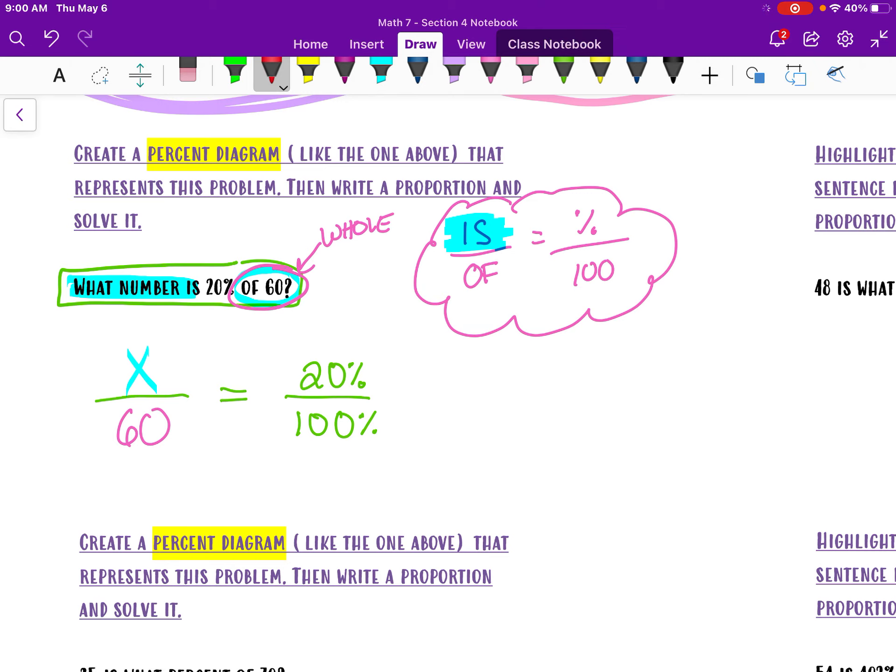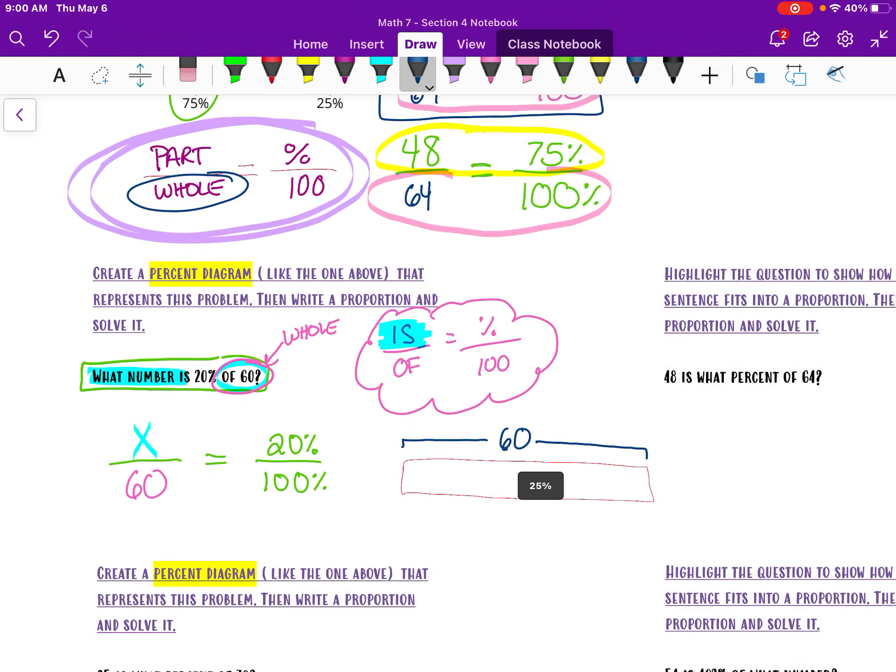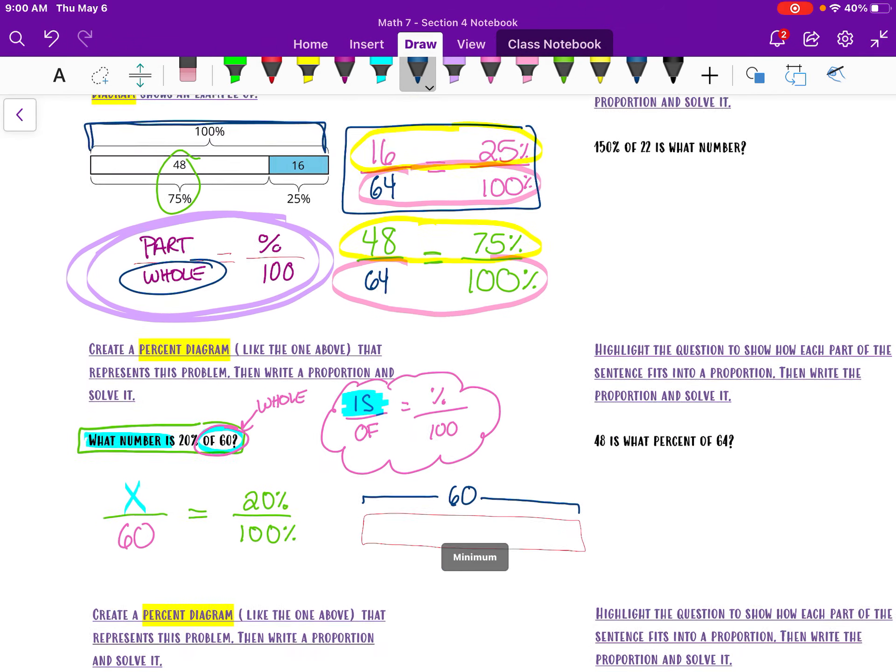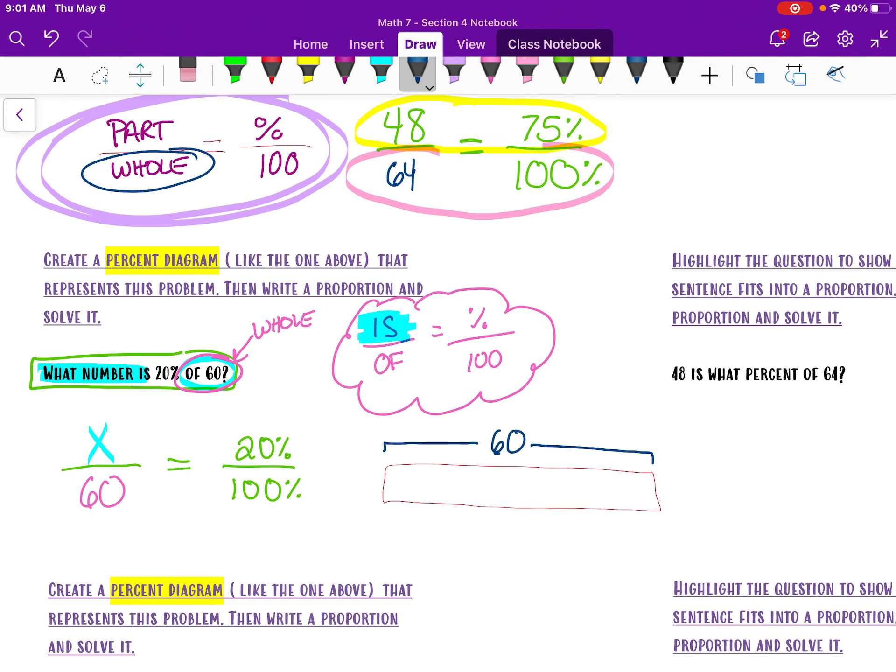Now, think about it in a diagram here. If I had, here's my whole, my 100%. What number is 20% of 60? So 60 is my whole amount. 60 is my whole amount there. And I know that I have some part of it, which is 20%.